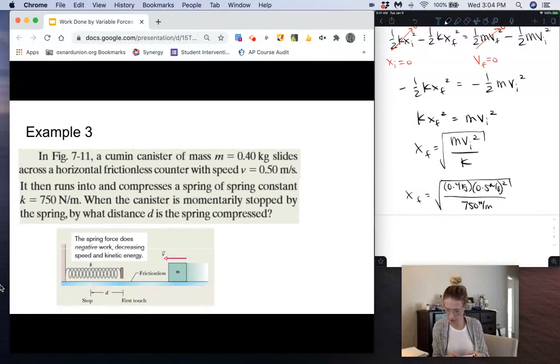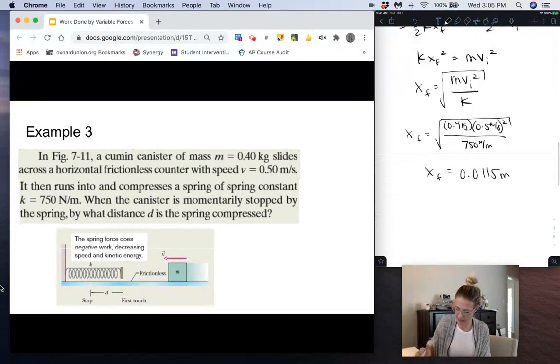So we have 0.4 times 0.5 times 0.5 divided by 750 square root of answer, and we end up getting a final position or a compression of 0.0115 meters. And then if we multiply that by 100, we get this in centimeters. So that's our answer.